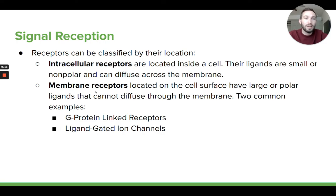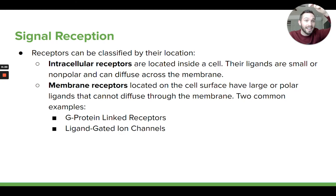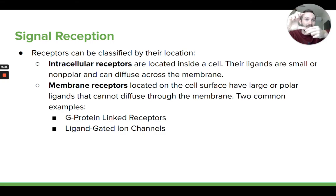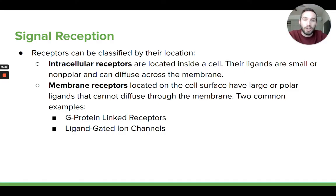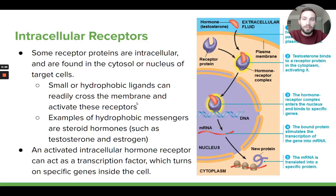Membrane receptors are receptor proteins that are actually embedded on the cell membrane, and they bind to signaling molecules outside the cell. You have signaling molecules, these ligands, outside the cell, and they actually just bind to receptor proteins embedded on the cell membrane. They can bind to that protein on the outside of the cell, and then that protein can cause something to now happen inside the cell. There are two types of membrane receptor proteins we're going to look at in this class, which we'll get to in a second. But let's start with intracellular receptors.